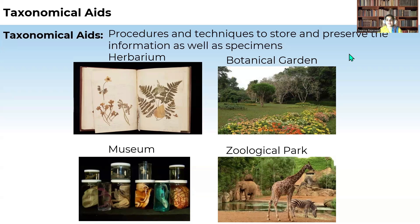When you see about the taxonomical aids, what is meant by taxonomical aids? These are the procedures and the techniques which help us to tell some information about the specimens. It may be the plants or it may be the animals or anything — techniques or procedures or preserved information which helps us to have information about all the animals and plants.